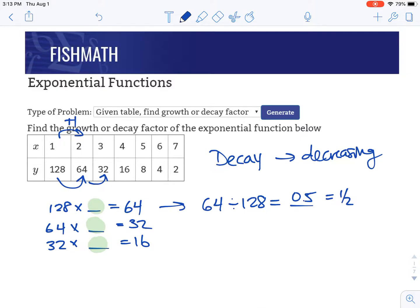And this will happen no matter which two points you use. If I do 32 divided by 64, I'm going to get the same thing, 0.5. So our decay factor is one half for this problem.